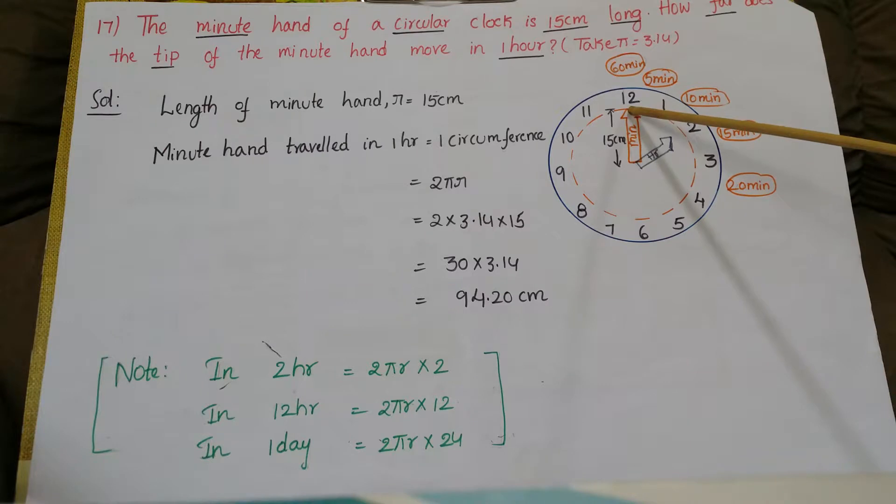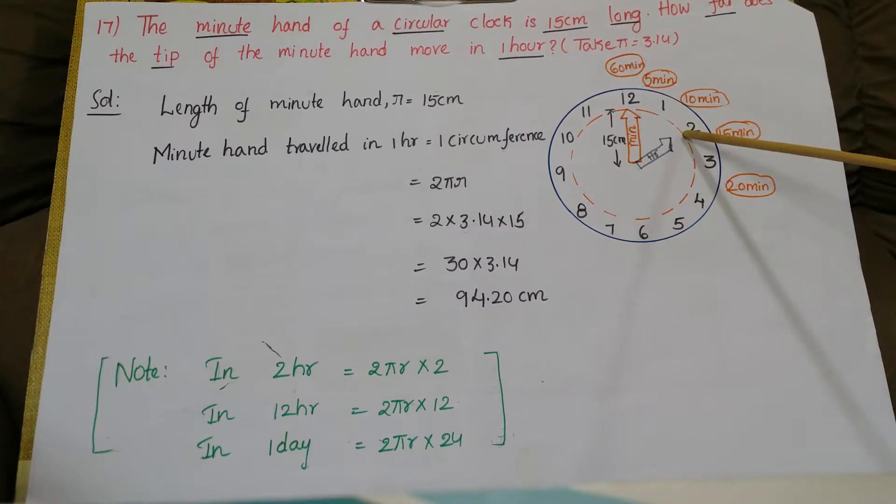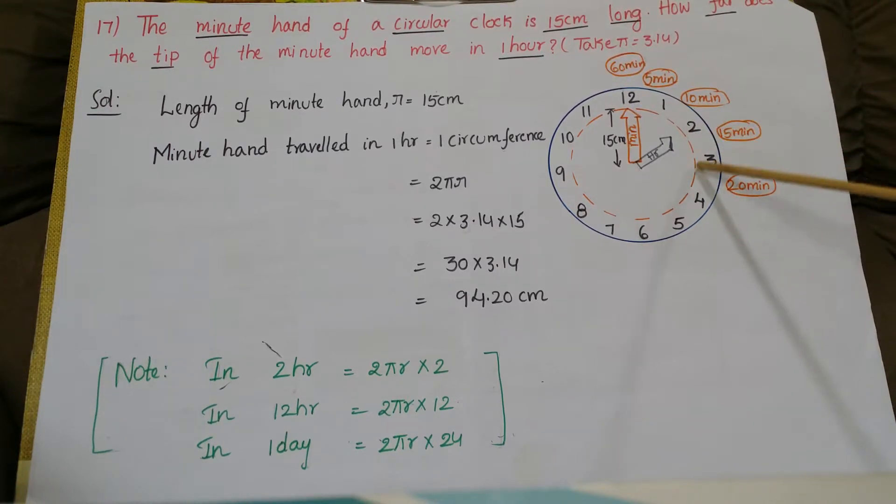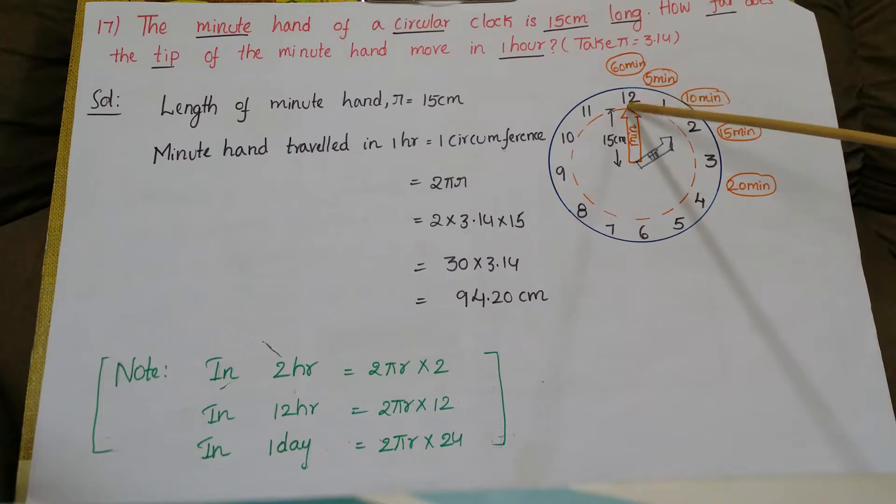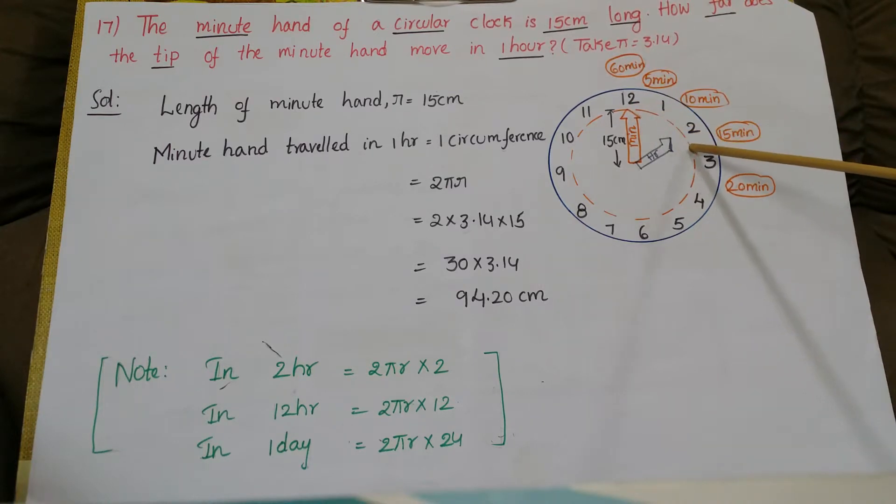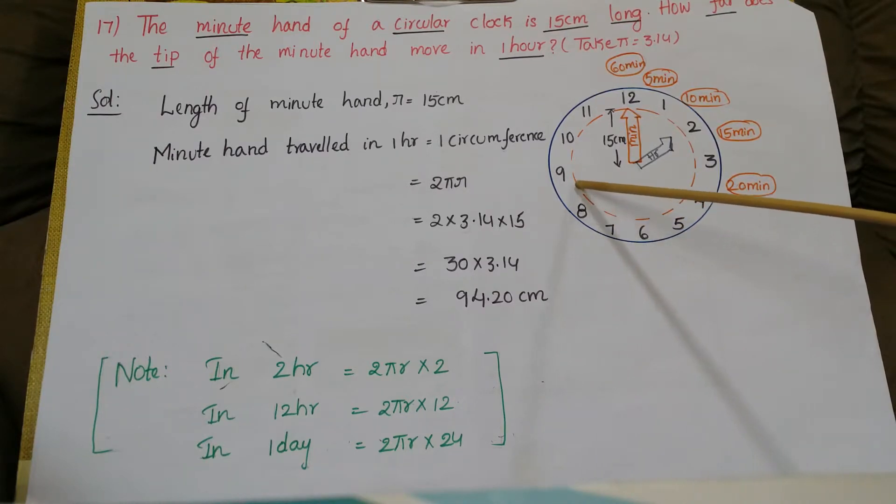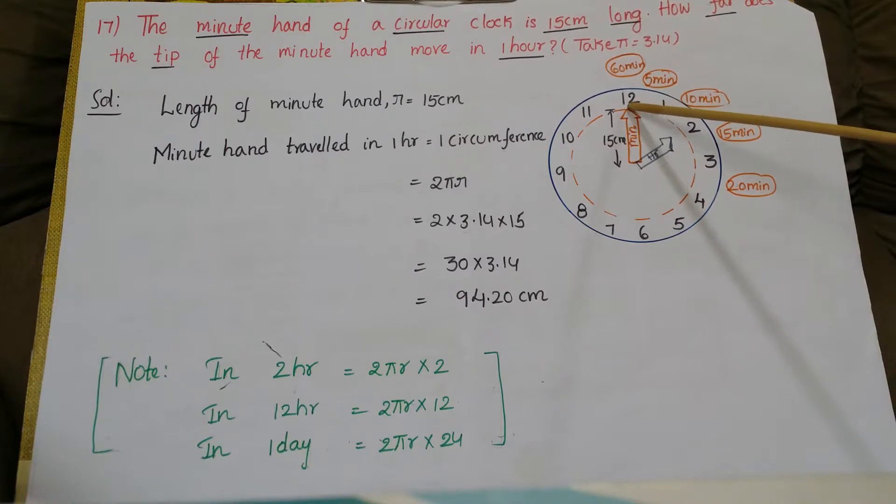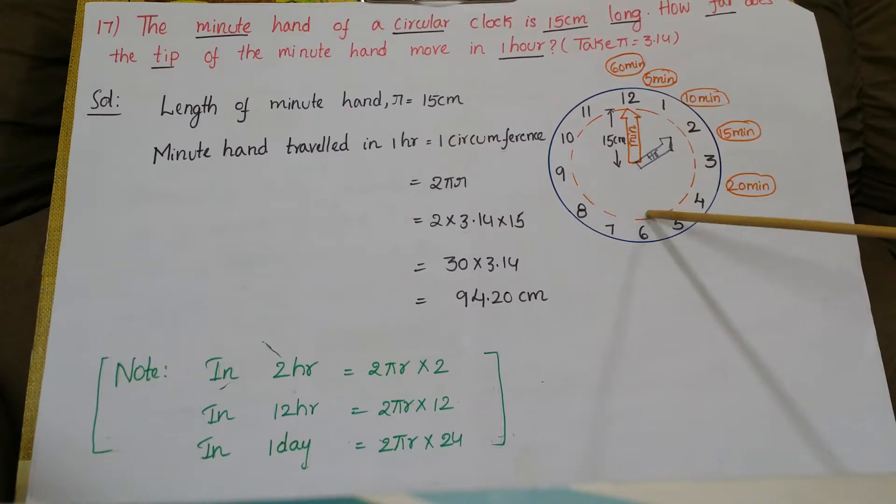See here, the minute hand travels from here to here in 5 minutes. This distance is 5 minutes it travels, and till here 10 minutes, and till here 15 minutes. So it travels along this path, see here. So till here 20 minutes, 25 minutes, like this 30 minutes, 35, 40, 45, till 60 minutes.